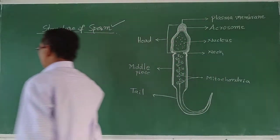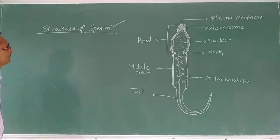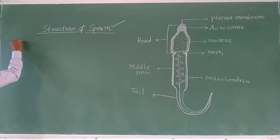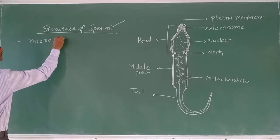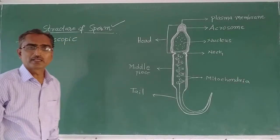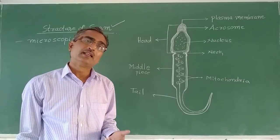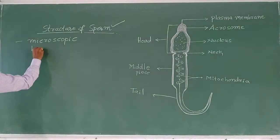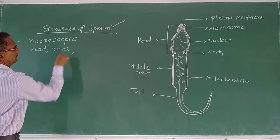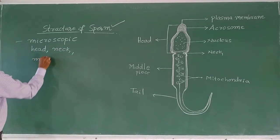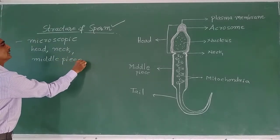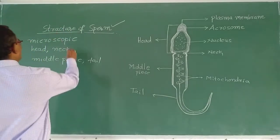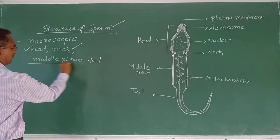The sperm mainly contains four parts. First, the sperm is microscopic in nature — it is very small and cannot be seen with the naked eye. The sperm is composed of four parts: the head, neck, middle piece, and tail.